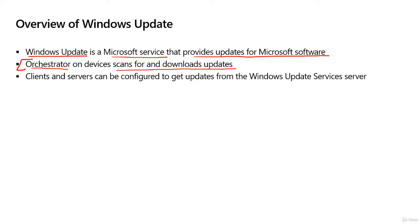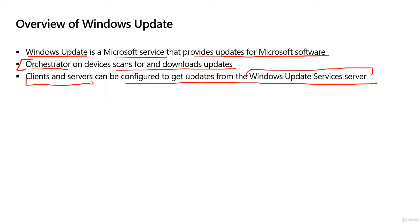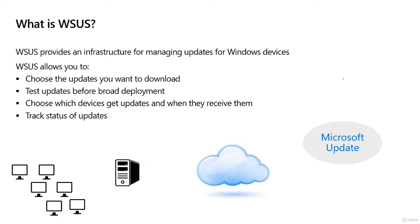We can configure all our devices — clients and servers — to get updates from a WSUS server on the network. The reasons for doing this are: first, to limit the amount of bandwidth used, and second, to control which updates get installed on clients and which get installed on servers. That's where WSUS comes into play.